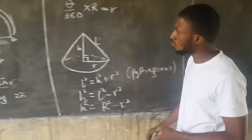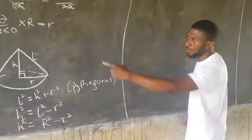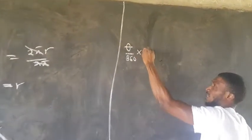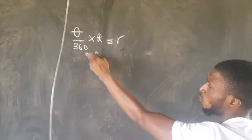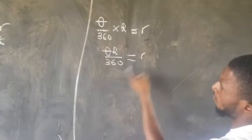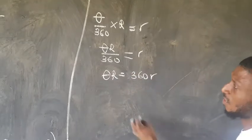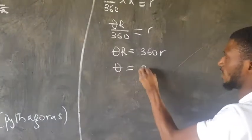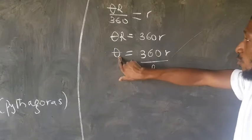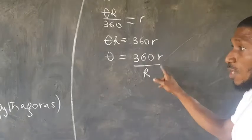To find the angle theta in relation to the cone and sector, use the relation θ/360 × R = r. Cross-multiplying gives θR = 360r, therefore θ = 360r/R. This is the relationship between the angle of the sector theta, the small r (base radius of the cone), and the big R (radius of the sector).